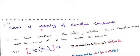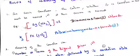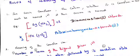Let us see the next topic: rules of naming complex compounds. For ionic complexes, the cation — whether it is a complex or not — should be written first, and then the anion is named second. For example, the first square bracket is taken as the counter ion. The first square bracket is considered a cation; the second square bracket is called the anion. So this is the cation, and this is the anion.